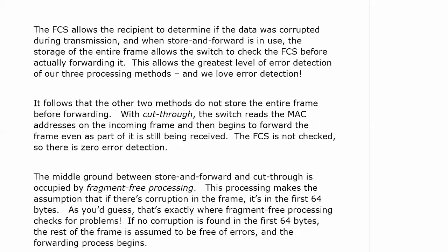This allows the greatest level of error detection of our three processing methods, and you can see why this is the default on so many Cisco switches. The other two methods do not store the entire frame before they forward it. With cut-through, the switch reads the MAC addresses on the incoming frame and begins to forward the frame even as part of it is still being received — we're kicking it out the back door as it comes in the front door. The FCS is not checked at all, so there's zero error detection.